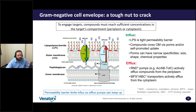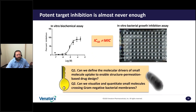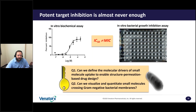This means that compounds with cytoplasmic targets face additional obstacles to accumulation beyond those compounds with periplasmic targets. And what this leads to is that it's really important to be able to measure subcellular accumulation of compounds. When I started at Novartis, one of the things pounded home time and again is that potent target inhibition is almost never enough. Our mantra was: IC50 does not equal MIC. The question my group was challenged with was, can we define the molecular drivers of small molecule uptake to enable structure permeation-based drug design, and can we visualize and quantitate small molecules crossing gram-negative bacterial membranes?